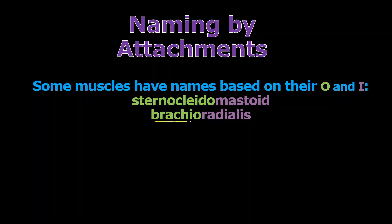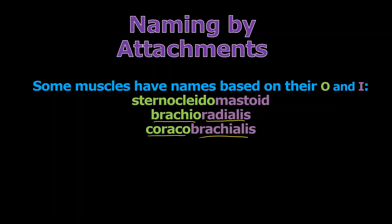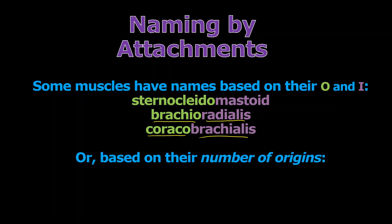Another example: brachioradialis. It sounds like its origin is on the humerus — brachio, brachium for arm — and the insertion is on the radius. This would be a perfect example of a muscle crossing the elbow, flexing and extending the forearm. Coracobrachialis is another one named by its attachments — its origin is on the coracoid process of the scapula and the insertion is on the humerus, so it would help move the humerus but not the forearm technically.